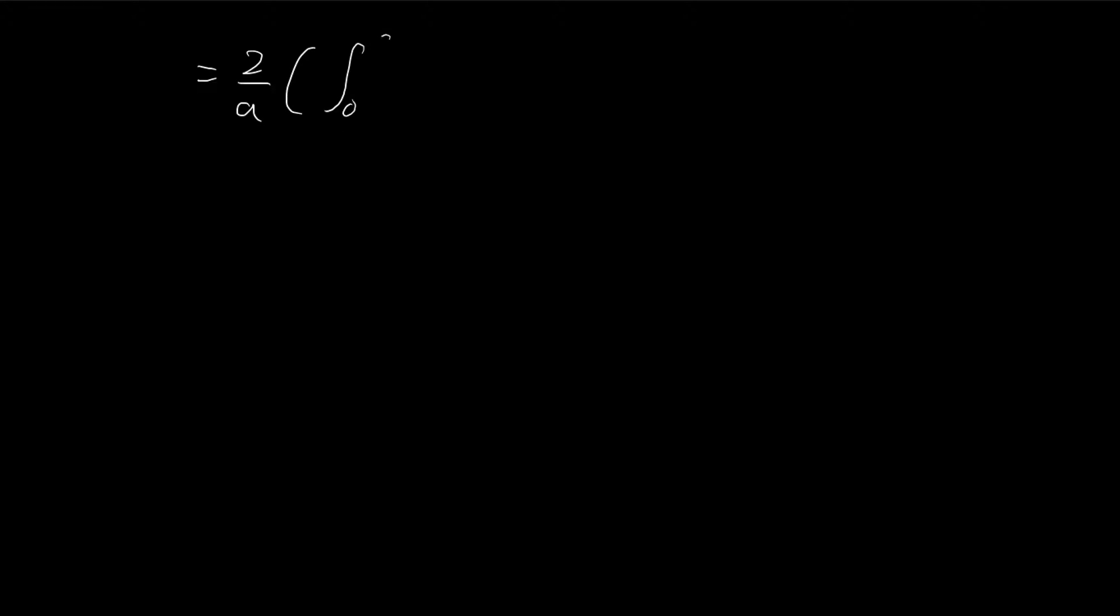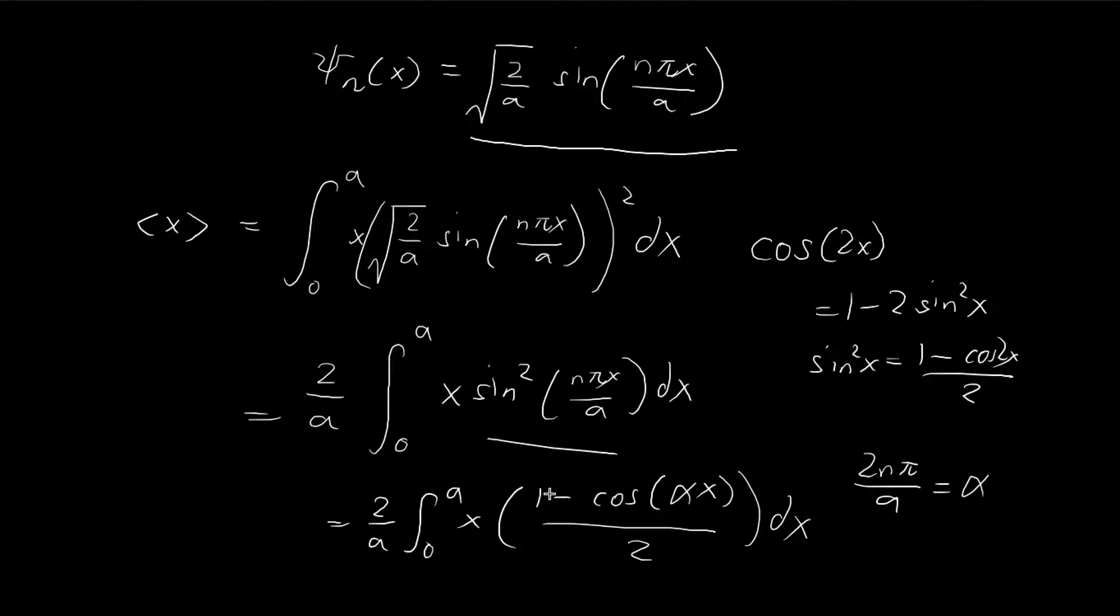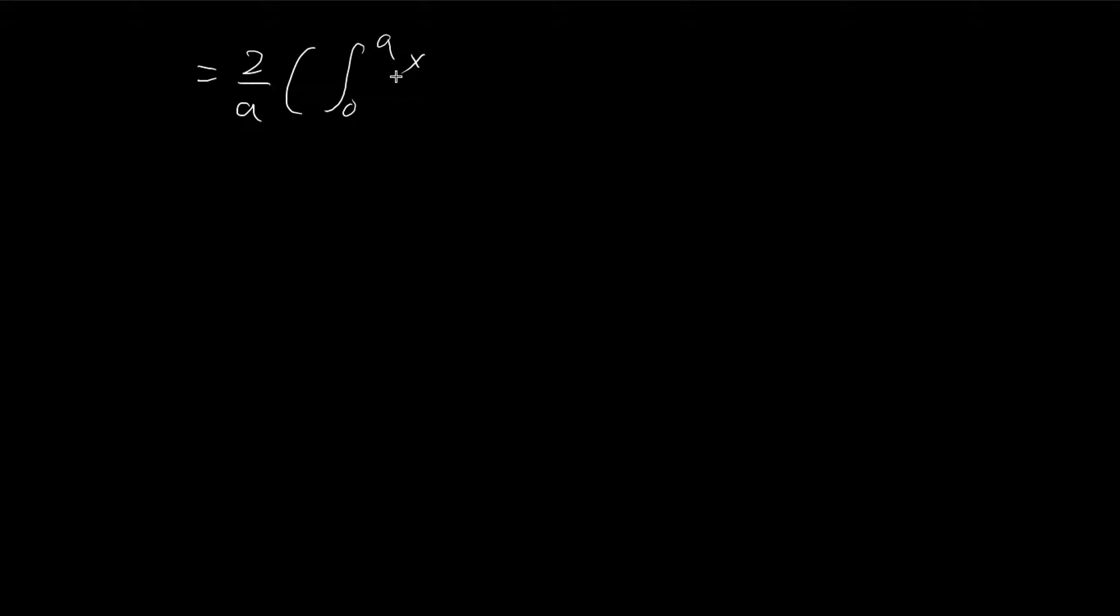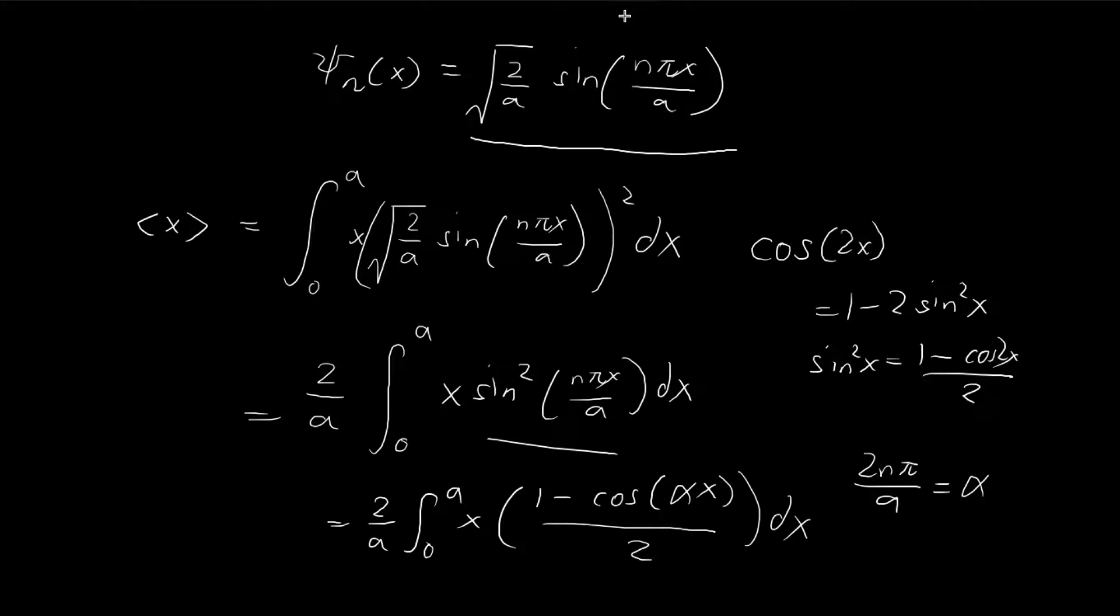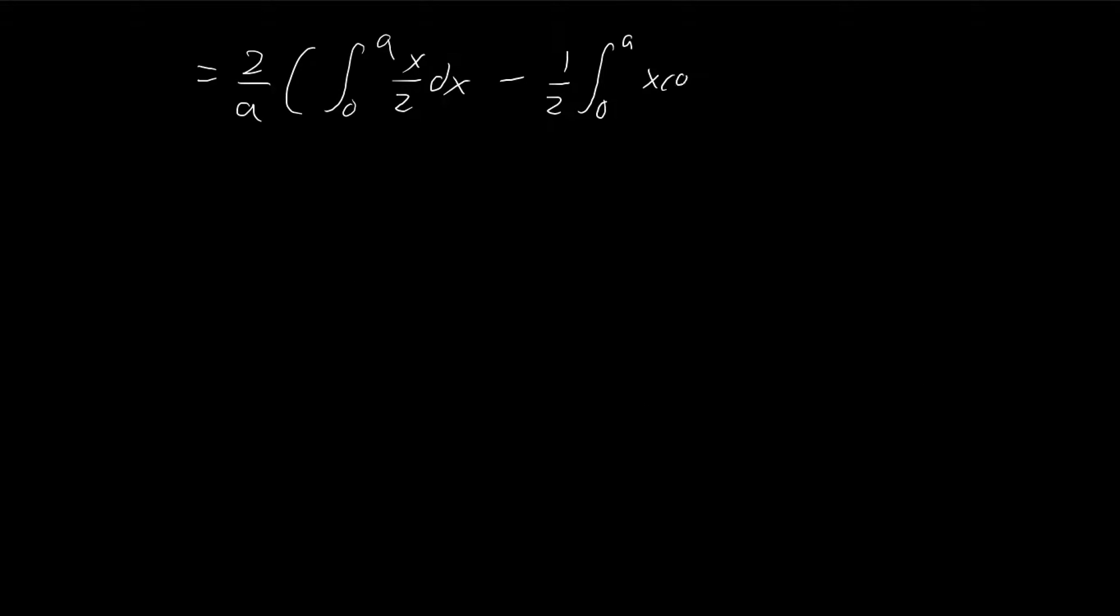You see how that comes in two parts. There's a relatively simple part, there's an x over 2 dx. And then there's a slightly more complex term. There's an x multiplied by a cosine. We can get rid of this x multiplied by a cosine by using integration by parts. Let us consider this integral first.